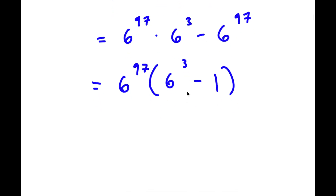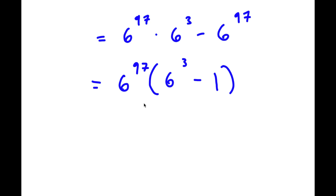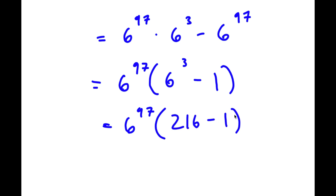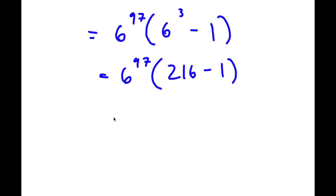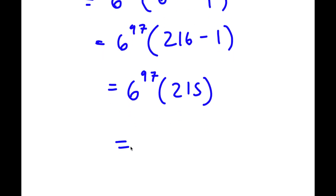Now, 6 to the power of 3: 6 squared is 36, and 36 times 6 is 216. So I have 6 to the power of 97 times 216 minus 1. And 216 minus 1 is 215. So my answer is 6 to the power of 97 times 215.